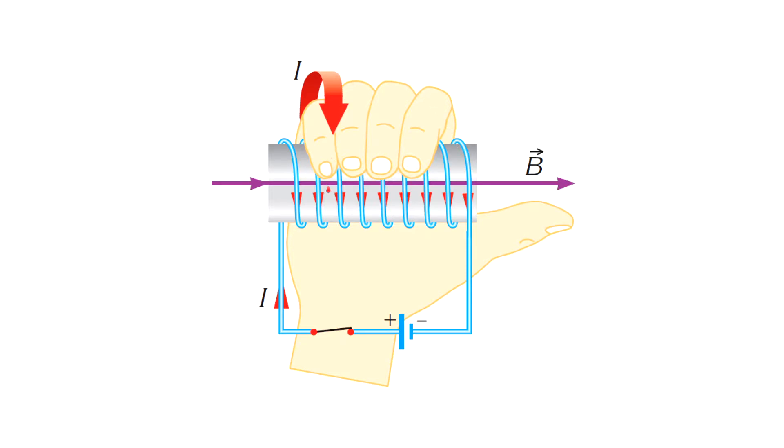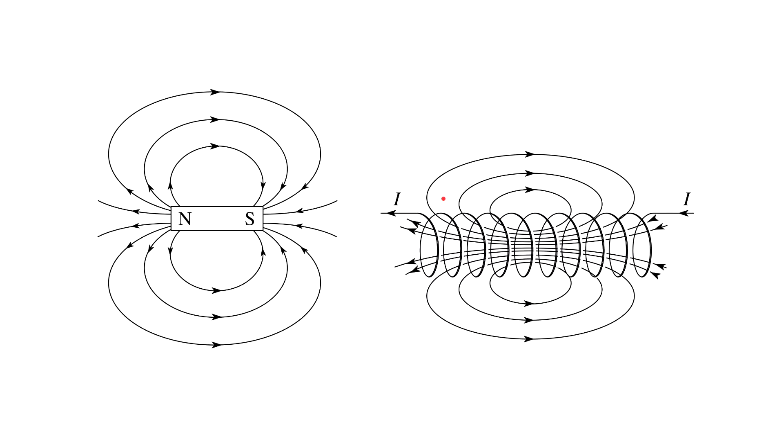As shown in the picture, curl your fingers with the direction of the current and the thumb will show the direction of the magnetic field. There is a very big similarity between the magnetic field of a bar magnet and the coil.